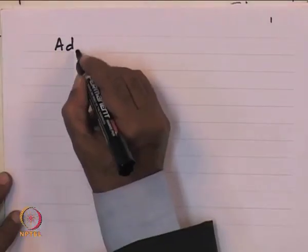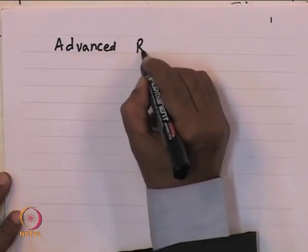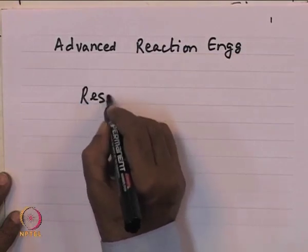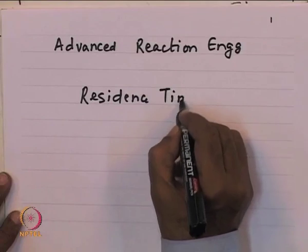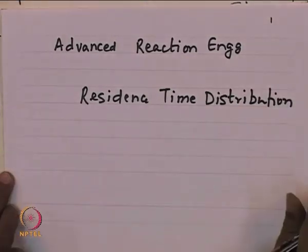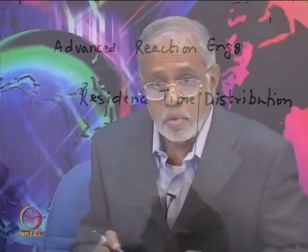Today we will be looking at residence time distribution. Why are we looking at residence time distribution? We know from real life that the longer a fluid element spends in the equipment, it undergoes a greater amount of reaction. Therefore, if you know this residence time, we will be able to understand how the reaction system is performing. What we want to do is to set up methods by which we can understand how long a fluid element spends in the equipment.